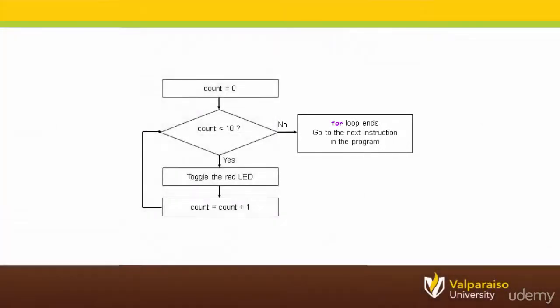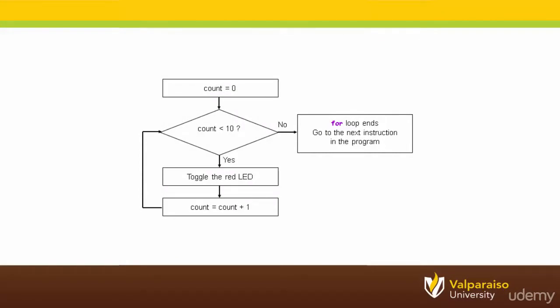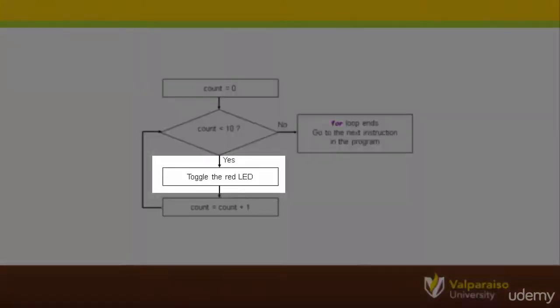In this example, however, we just initialized count to be equal to zero. Therefore, count will be less than 10. The for loop then allows the microcontroller to continue on to do something inside of the for loop. For example, to toggle the red LED light.